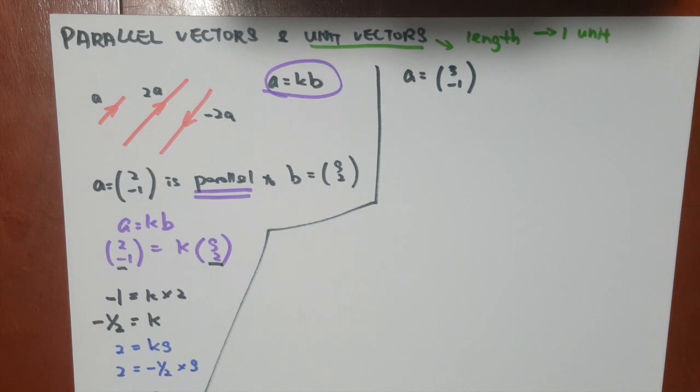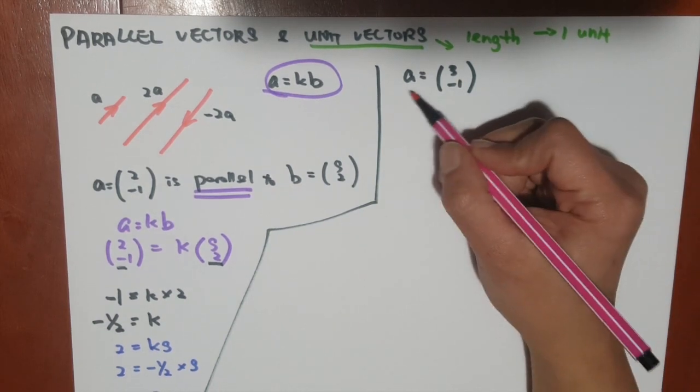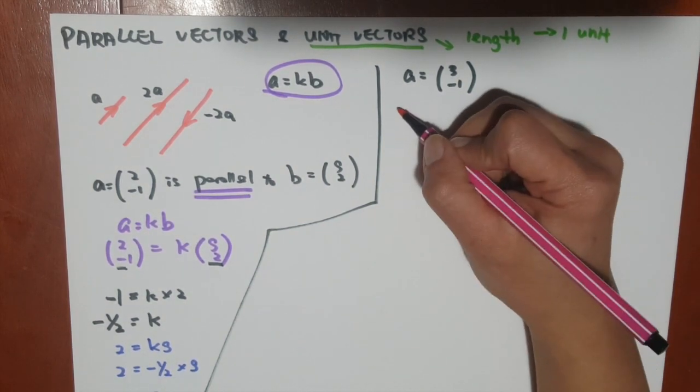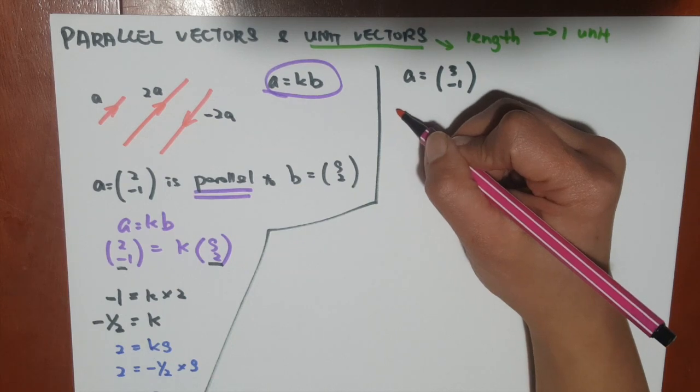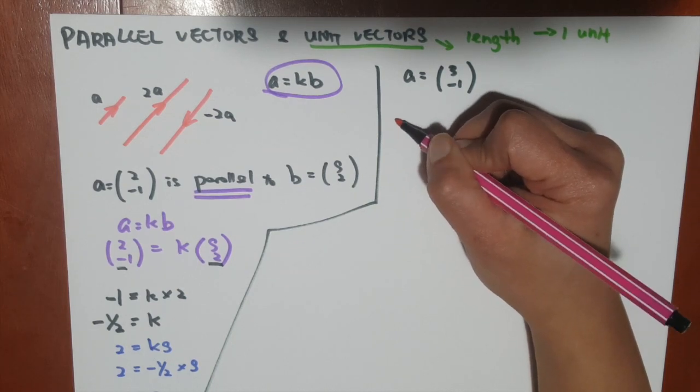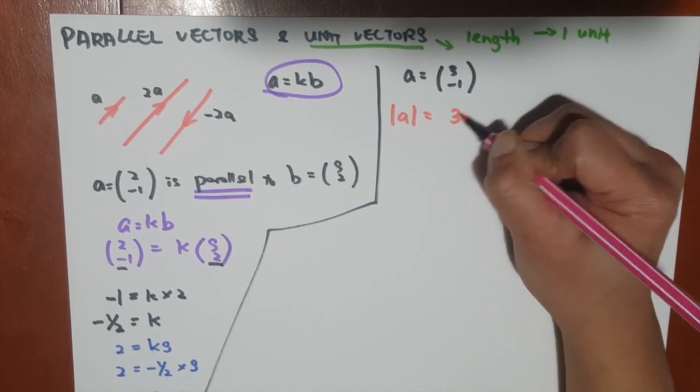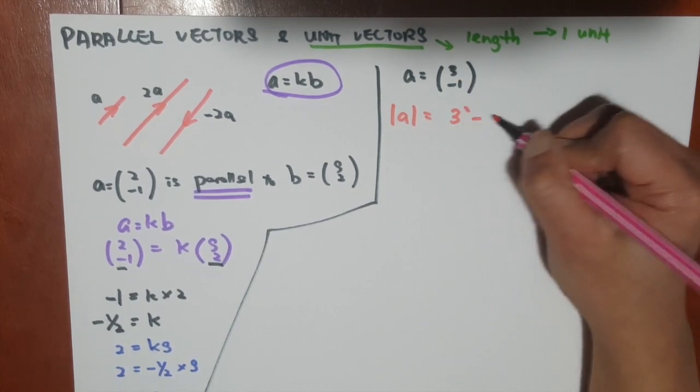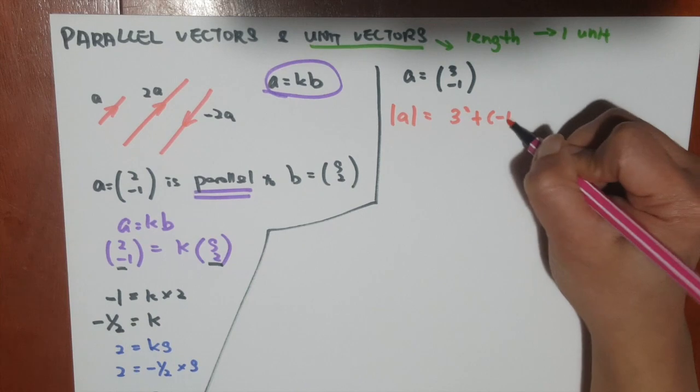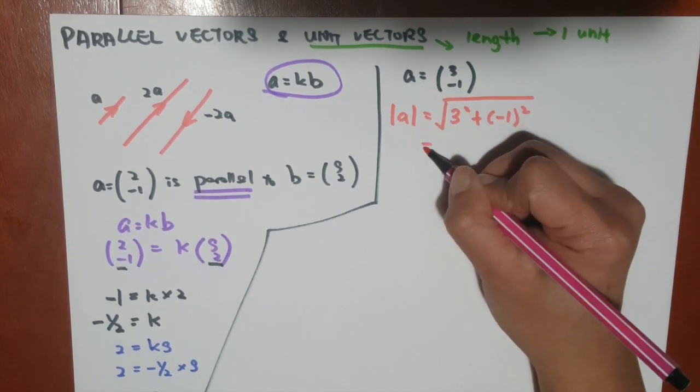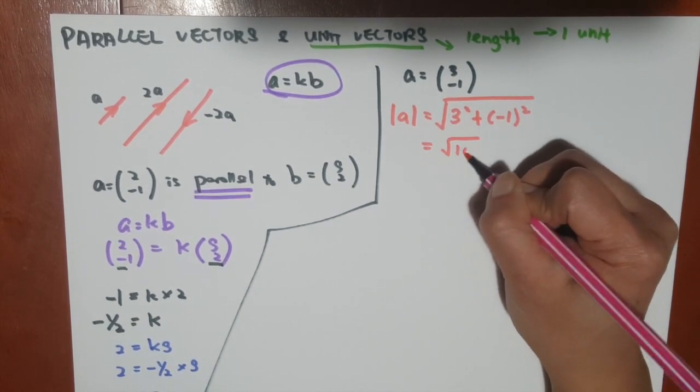So the first step that we need to know is what is the actual length of the vector. So the actual length of the vector can be found by finding the magnitude, which we have learned earlier, which is, we have to take 3 squared plus -1 squared, and square root. So this will give us a square root 10.